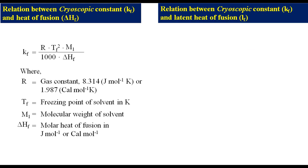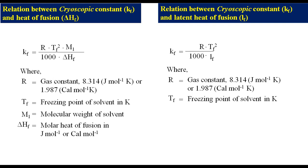Relation between the cryoscopic constant Kf and latent heat of fusion: Kf equals R times Tf squared divided by 1000 times Lf, where R is the gas constant, Tf is the freezing point of the solvent, and Lf is the latent heat of fusion in J·g⁻¹ or cal·g⁻¹ depending on the unit of R.